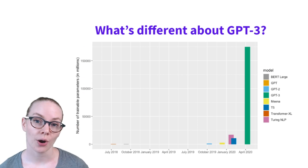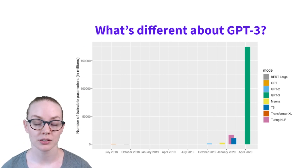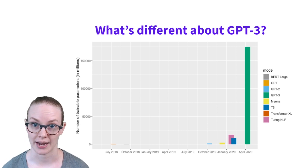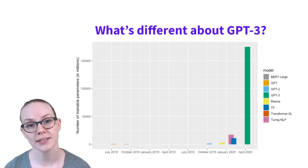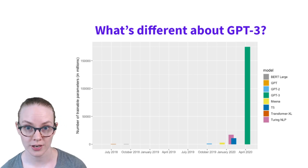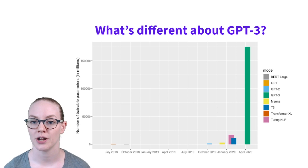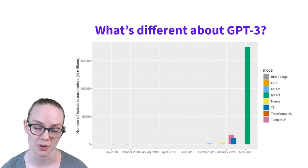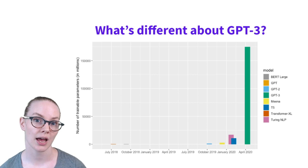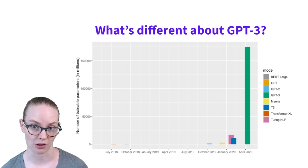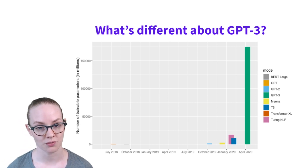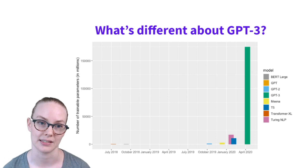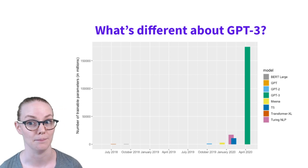What sets GPT-3 apart from earlier models is really its size — the number of trainable parameters that it has. These are weights that will need to be updated during training. GPT-3 is the green line on this graph, and you can see that the first version of GPT or BERT, which at the time were considered very large models, are almost invisible on this graph where the axis is the number of trainable parameters in millions.